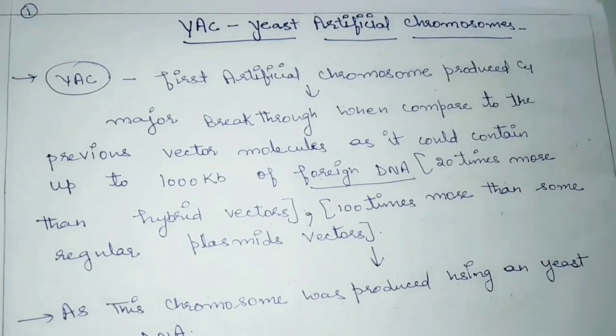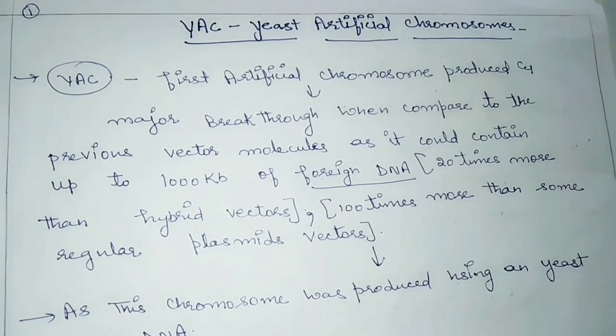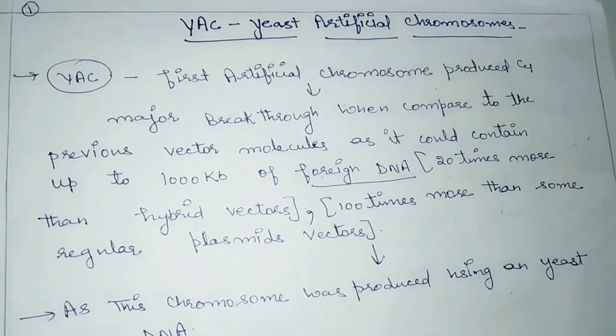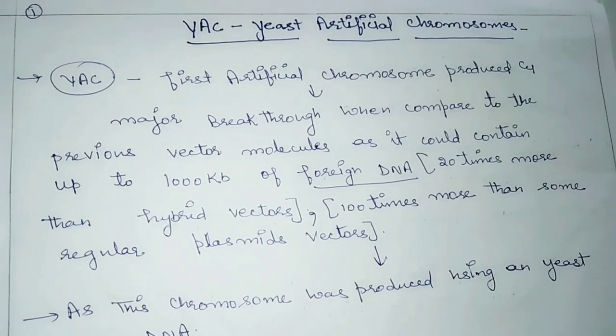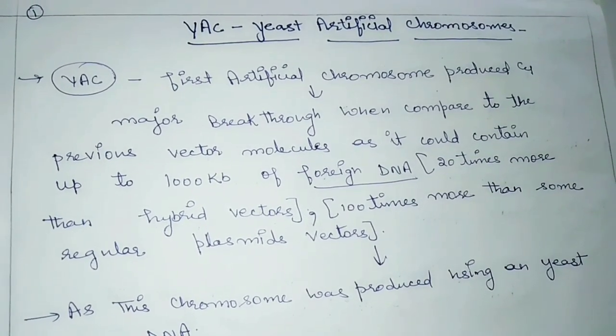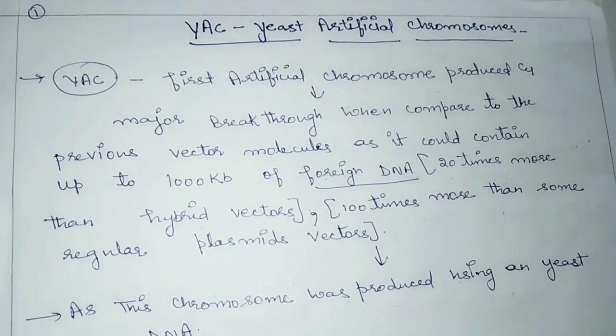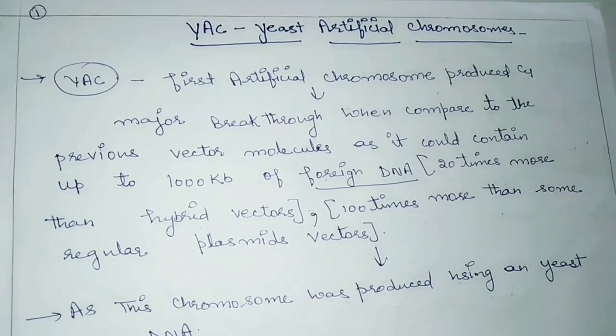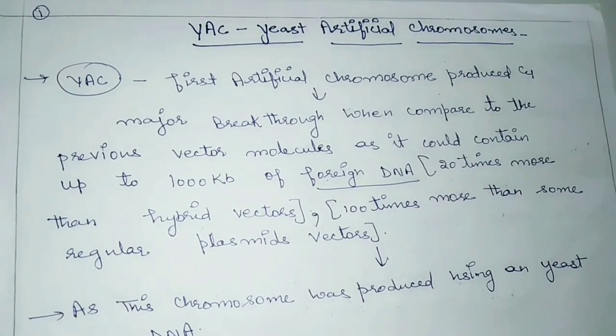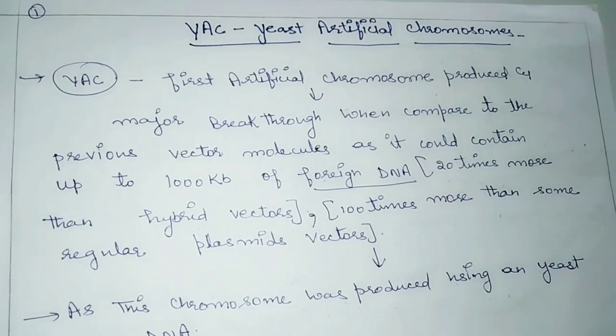YAC was the first artificial chromosome produced and was a major breakthrough when compared to previous vector molecules, as it could contain up to 1000 kb of foreign DNA.